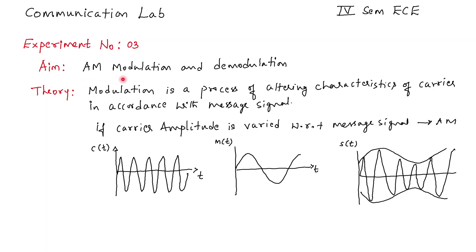Our aim is to generate AM modulation and demodulation waves. Modulation is a process of altering the characteristic of a carrier in accordance with the message signal. If the carrier amplitude is varied in accordance with the message signal, then it is called amplitude modulation.